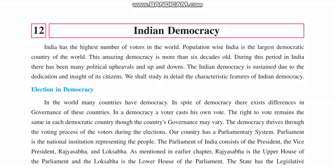India has the highest number of voters in the world. Population-wise, India is the largest democratic country in the world. China is the most populous country, but it is not a democracy — it is a communist country. So India, population-wise, is the largest democracy in the world. This amazing democracy is more than seven decades old.